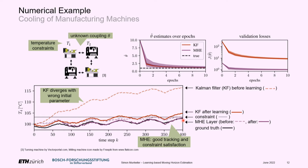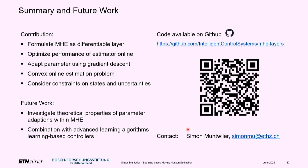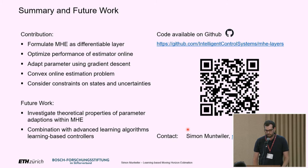In summary, we propose to formulate an MHE as a differentiable optimization layer, which allows us to optimize estimator performance online in a gradient-based fashion. The resulting online estimation problem is convex and we can include prior knowledge through constraints. In future work, we investigate the theoretical properties of adapting parameters online in our estimator and how to combine this with advanced learning algorithms or learning-based controllers. The code and numerical example are available on GitHub.